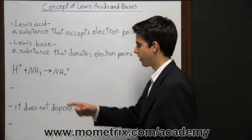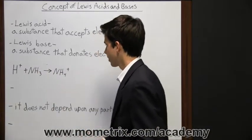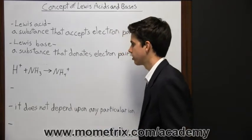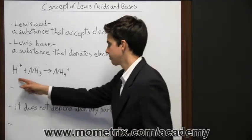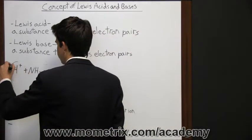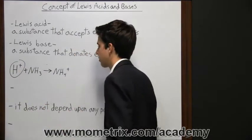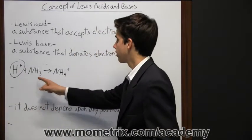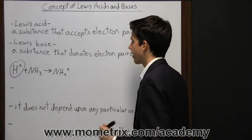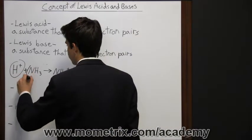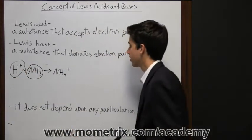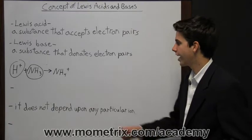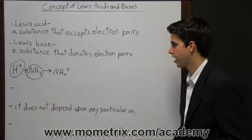Look at this reaction right here. We have hydrogen and ammonia in a reaction to form this product. The Lewis acid is the hydrogen because it accepts an electron pair from ammonia. Ammonia is the Lewis base because it's donating the electron pair to hydrogen on the product side.